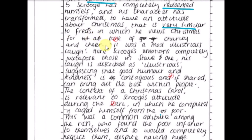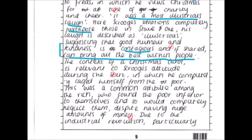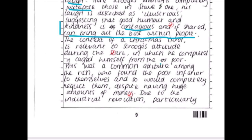There's a lack of cohesiveness here, which will stop you reaching band five — the whole argument needs to flow together. Then: 'It was a most illustrious laugh. Scrooge's emotions are completely juxtaposed to those in stave one; his life is described as illustrious, suggesting that good human kindness is contagious and can bring out the best within people.' That's beautiful analysis about Scrooge in stave five, although it could be linked to Christmas a little more securely.